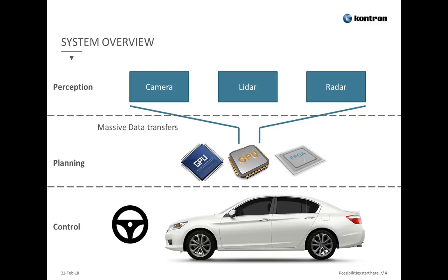The next phase is the planning phase, where the sensor processing computer needs to take a driving decision — for example, computing a steering angle from a set of images. For the processing unit, it can become a combination of CPU plus an accelerator device, like a GPU or FPGA, or for example, another CPU.